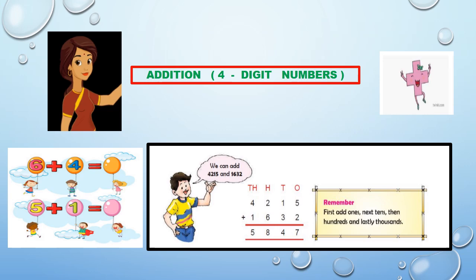Add the ones. 5 plus 2 which is equal to 7. Write 7 in ones. Then, we have to add tens, hundreds and lastly, thousands. Therefore, the sum of 4,215 and 1,632 is equal to 5,847, which is 5 thousands, 8 hundreds, 4 tens and 7 ones.